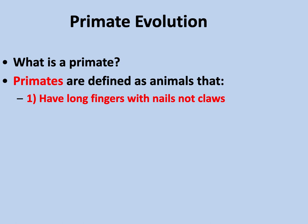Primates we can define with a couple of characteristics. As we said in biology, there are always exceptions to the rule — it's malleable because of evolution. There's always some outliers. But by and large, primates have these characteristics. The first one is they have long fingers with nails, not claws. Think about how unique that is — look at your fingernails. Why do you have fingernails? What is that good for?